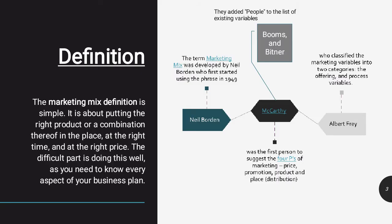First is the definition. Marketing mix definition is simple — it's about putting the right product, or a combination of two, in the right place, at the right time, and at the right price. The difficult part is doing this well, and you need to know every aspect of your business plan.